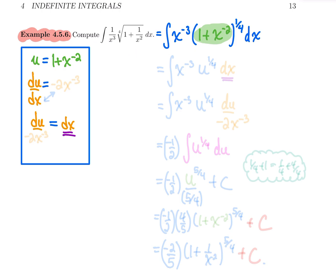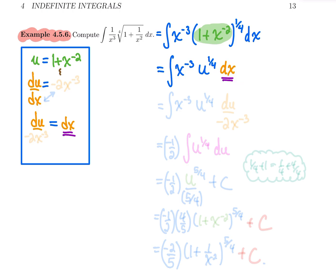Doing it in two steps: first, we get rid of the interior of the fourth root and call it u. The goal is to eliminate all the x's. To find dx, we go back to our substitution. The derivative of one is zero, and the derivative of x to the power minus two is minus two x to the power minus three. To find dx, swap those two terms: minus two x to the power minus three goes under du, giving us dx equals du over minus two x to the power minus three.